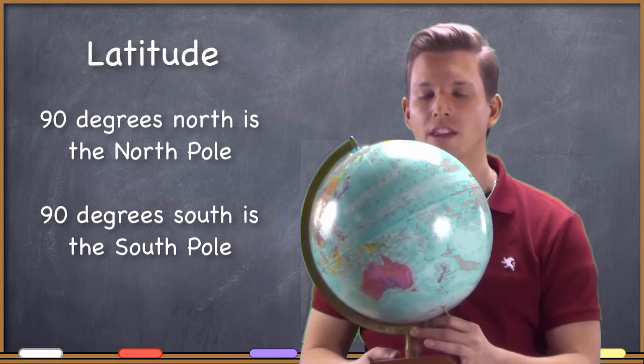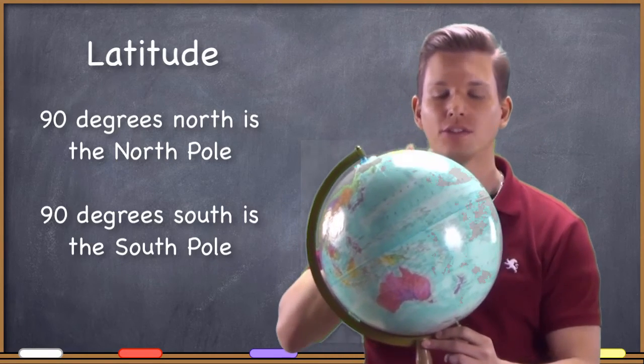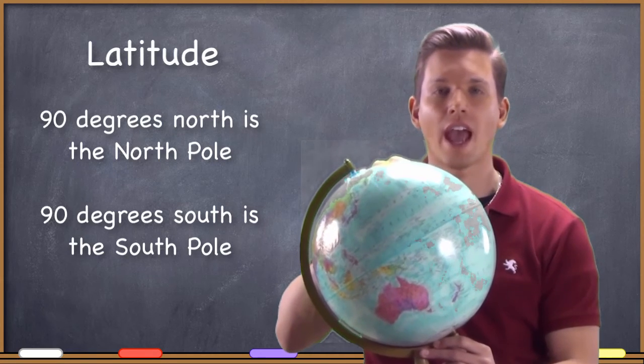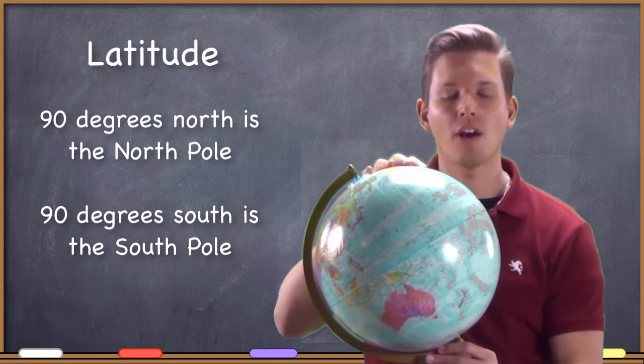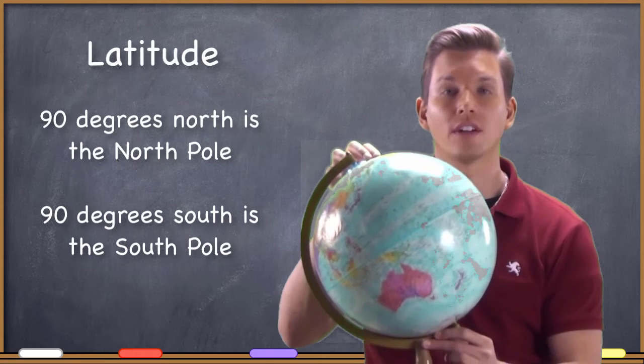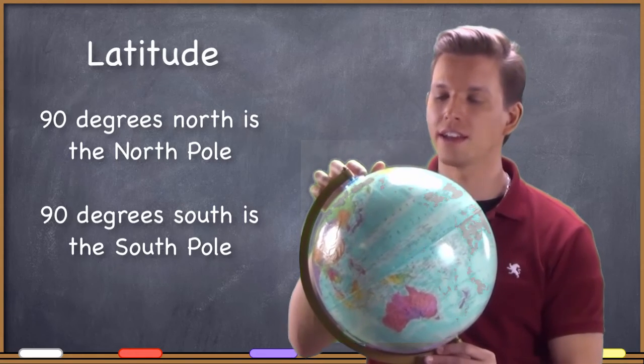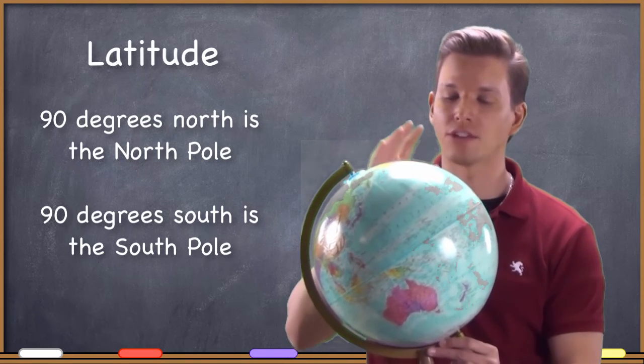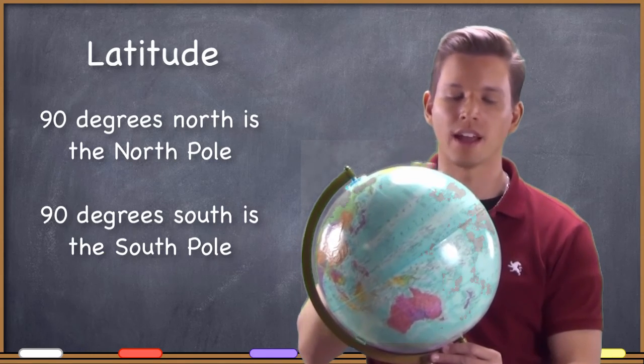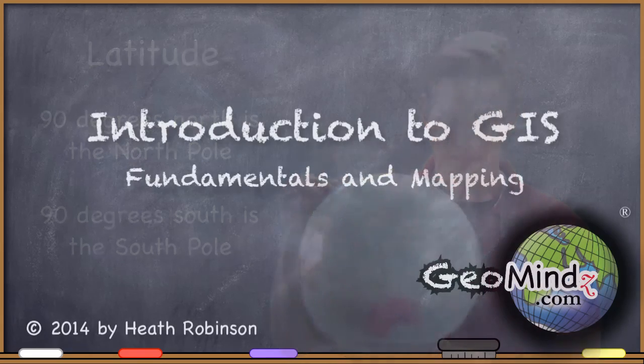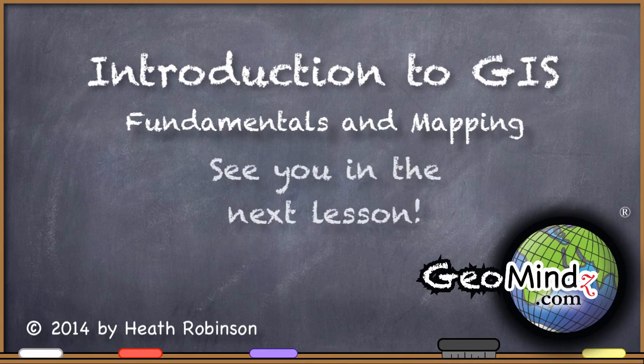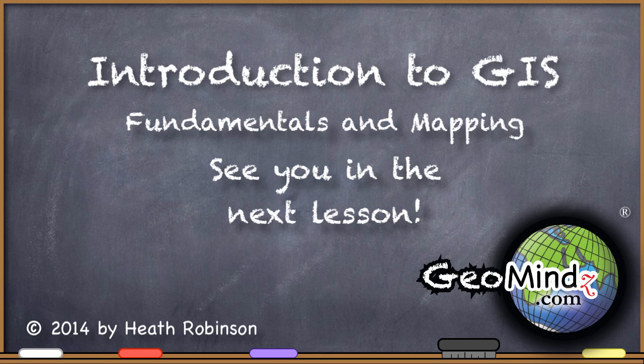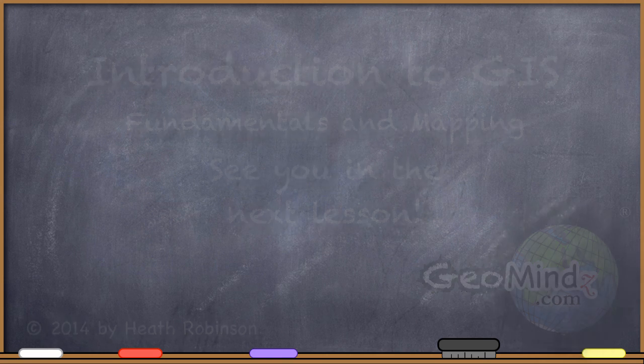And this is the very first way that we're going to be able to specify some kind of position on the planet. So let's take a look at historically how people were able to find their latitude because being able to find latitude has actually been something that people have been able to do even since ancient times.